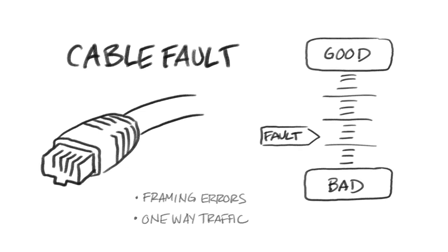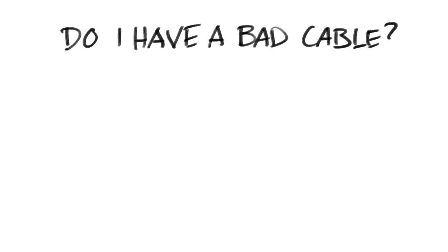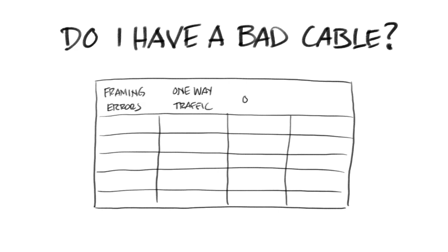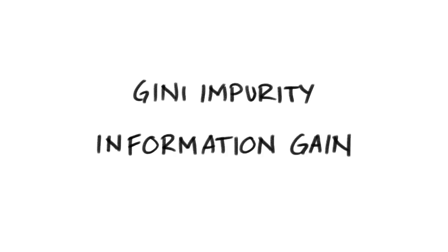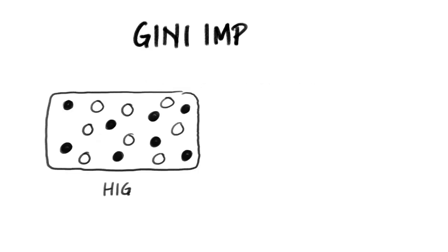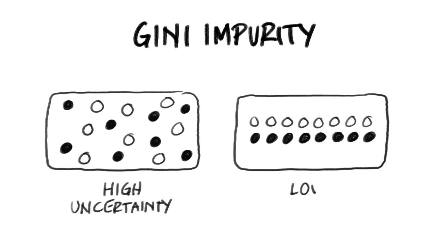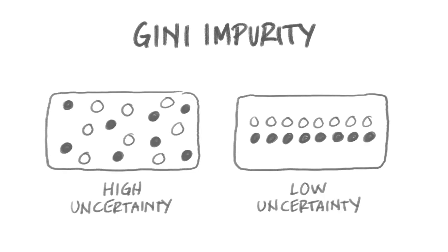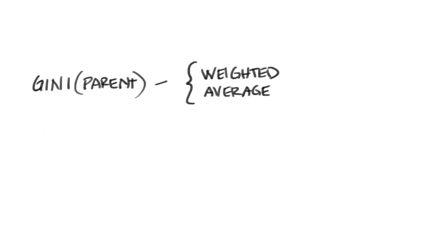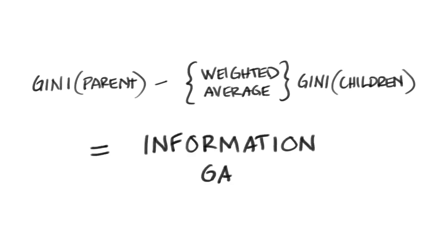We begin a decision tree by asking a question which will have the greatest impact on label separation. We use two metrics to determine that question: genie impurity and information gain. Genie impurity, which is similar to entropy, determines how much uncertainty there is in a node, and information gain lets us calculate how much a question reduces that uncertainty.